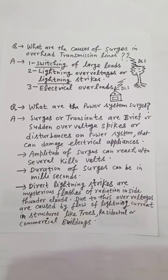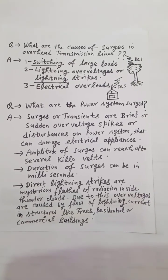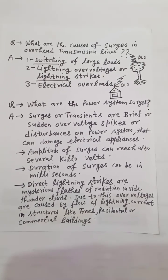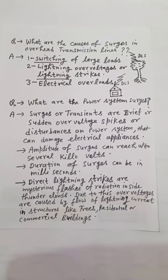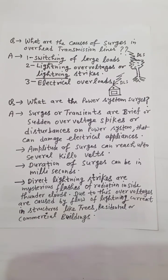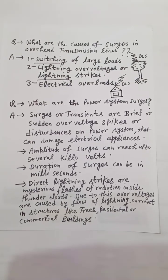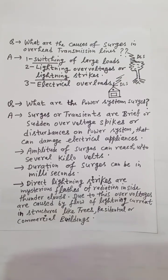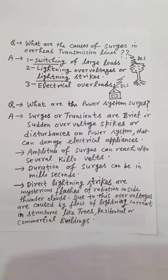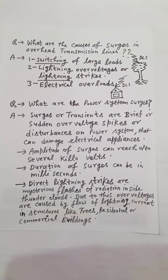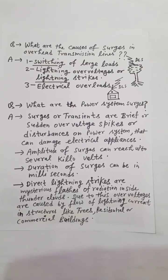What are the causes of surges in overhead transmission lines? The main causes are switching of large loads, lightning overvoltages or lightning strikes, and electrical overloads. What are power system surges? Surges or transients are brief or sudden overvoltage spikes or disturbances on a power system that can damage electrical appliances.